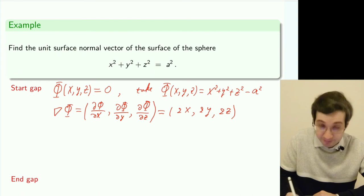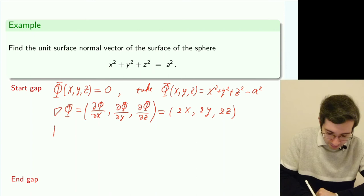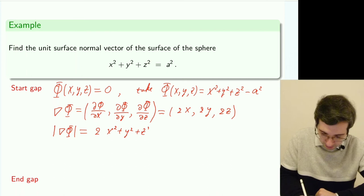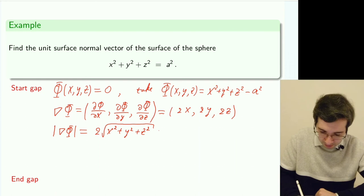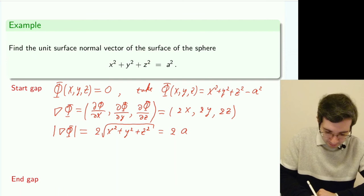And all that remains, because we want a unit normal with magnitude of 1, we also need to take the magnitude of that gradient, which will be √(2x² + 2y² + 2z²). And that will be 2a because we have that property that we have a radius of a.